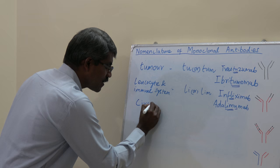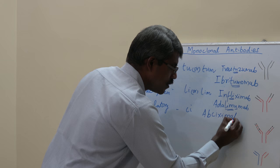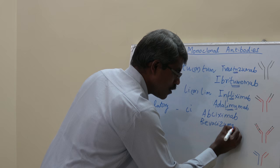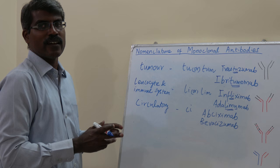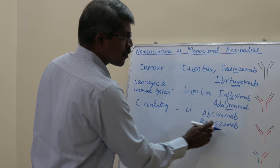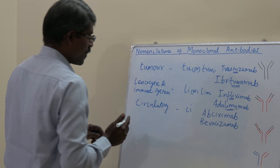If the target is the circulatory system, the infix 'ci' is used. Abciximab contains 'xi' (chimeric) and 'ci' (circulatory) — it targets glycoprotein IIb/IIIa and is used as an antiplatelet drug. Bevacizumab contains 'zu' (humanized) and 'ci' (circulatory) — it targets vascular endothelial growth factor (VEGF).